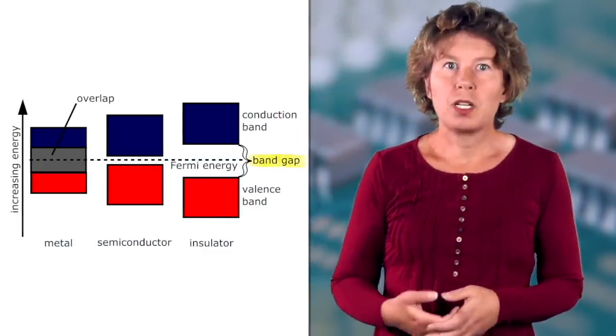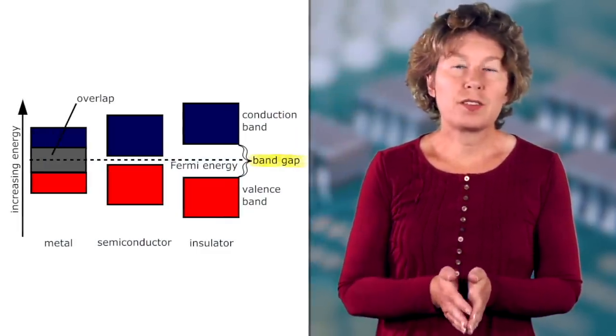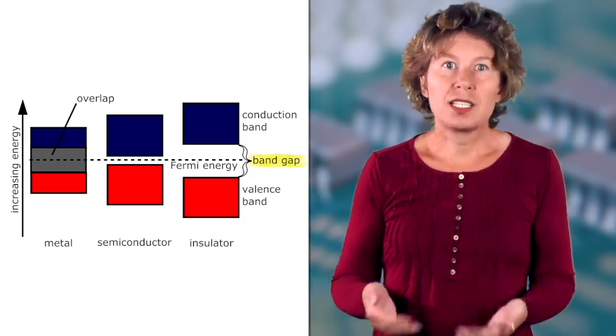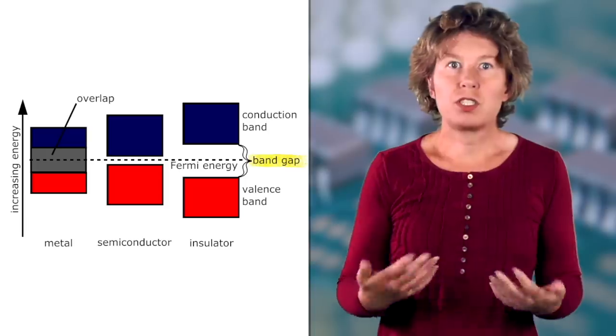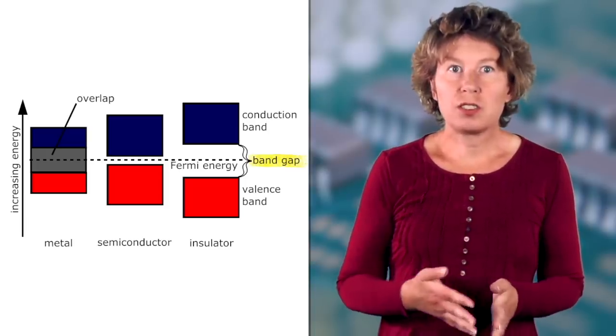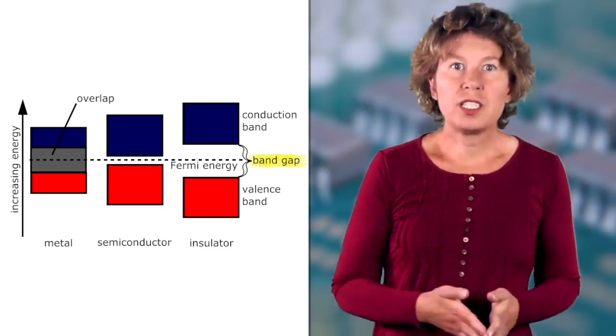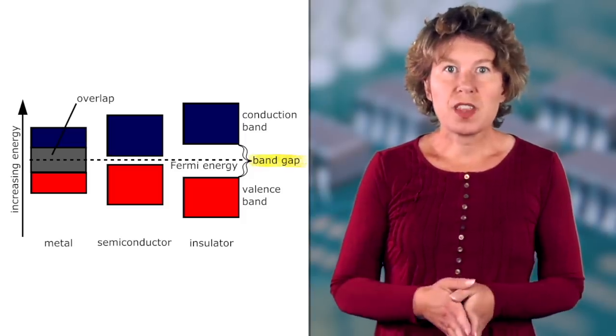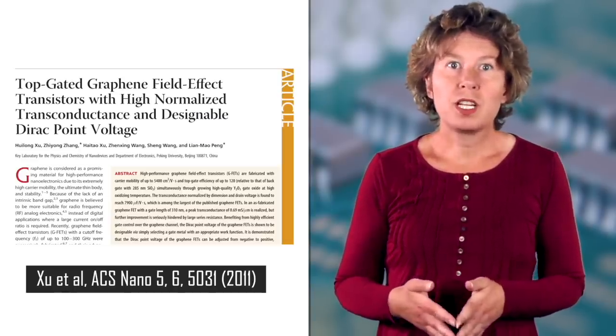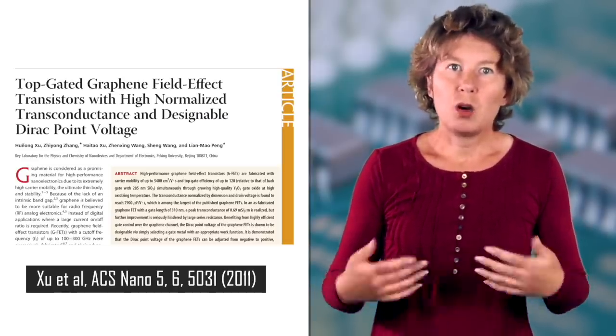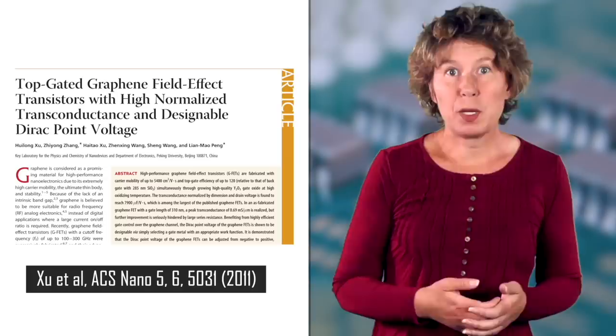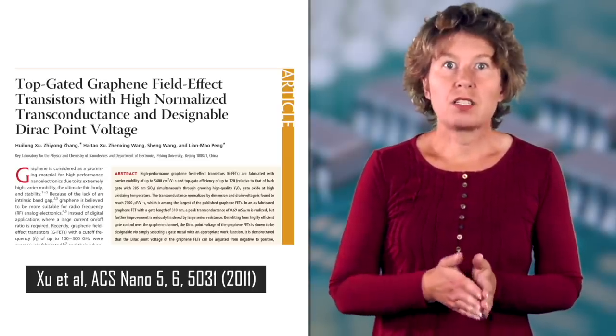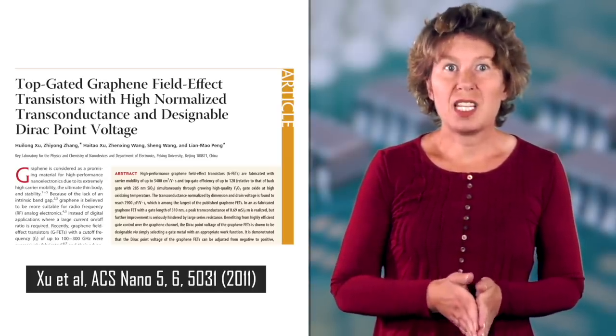Unfortunately, graphene doesn't have a good band gap, which means it can't fulfill the function of a transistor to act as a switch, at least not the way it is. This can be remedied by several tricks, such as adding a second layer onto the graphene or applying strain to it. Using these methods, some graphene transistors have been built and been shown to work. However, they are difficult to produce on a commercial scale, which makes it expensive. So these things are unlikely to end up on your phone anytime soon.